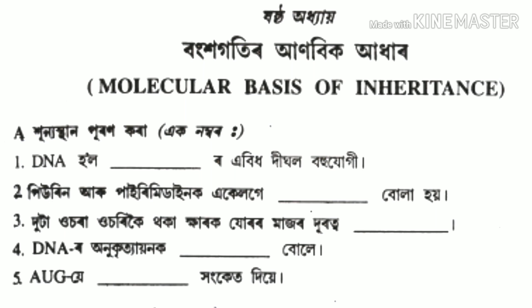Purine and Pyrimidine are together known as dash. The distance between two adjacent bases is dash. The second question is...